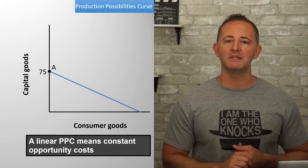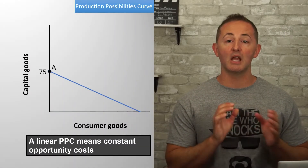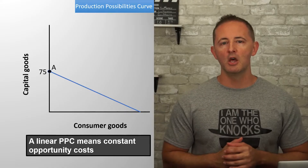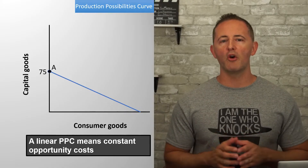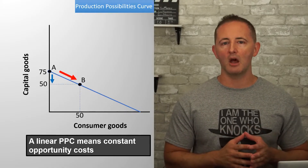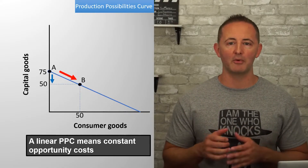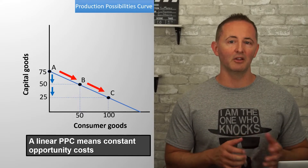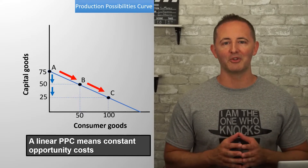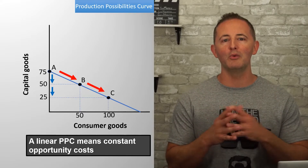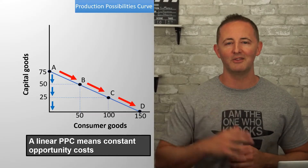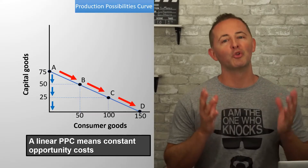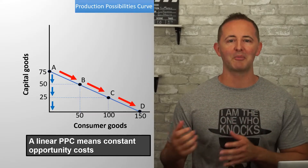Our linear PPC represents constant opportunity costs. Notice that when we go from A to B, our opportunity cost is 25 capital goods. When we go from B to C, it's still 25 capital goods. And when we go from C to D, you guessed it — 25 capital goods.